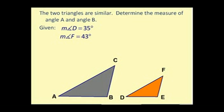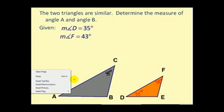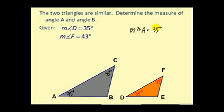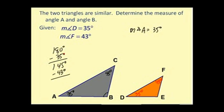Let's look at a problem. The two triangles are similar — determine the measure of angle A and angle B. We know angle D is 35 degrees and angle F is 43 degrees. Since the triangles are similar, corresponding angles are congruent, so angle C is also 43 degrees and angle A is 35 degrees. For angle B, we subtract from 180: 180 minus 35 minus 43 equals 102 degrees. So angle B equals 102 degrees.